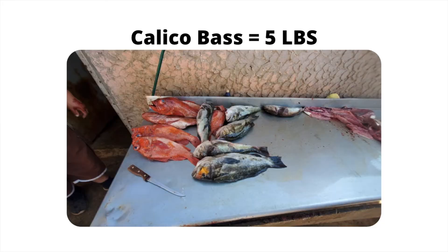Here is our first fish, a calico bass. Let's say we catch a calico bass that weighs roughly five pounds. Let's see how this impacts the fishing rod.